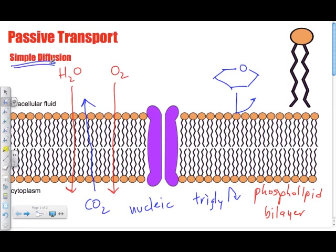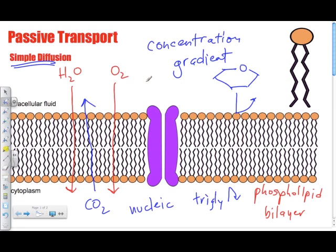How does simple diffusion move? Particles move along what we call a concentration gradient, meaning particles will move from an area of high concentration to an area of low concentration.